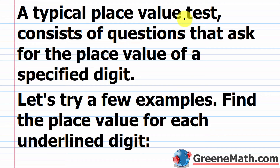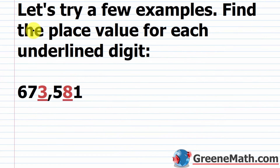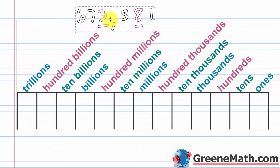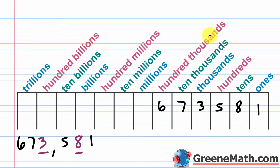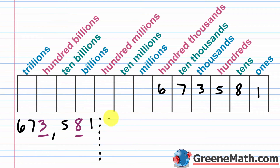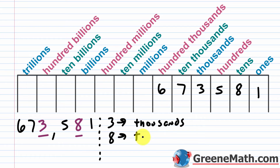Now let's look at some standard questions. A typical place value test asks for the place value of a specified digit. We want to find the place value for each underlined digit. Starting with the rightmost digit, 1, in the ones place; moving left: 8 in tens, 5 in hundreds, 3 in thousands, 7 in ten thousands, 6 in hundred thousands. So the underlined 3 is in the thousands place, and the underlined 8 is in the tens place.